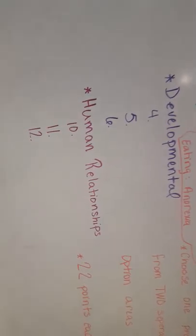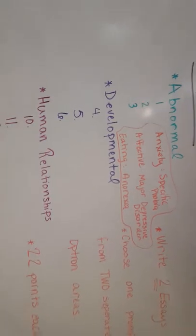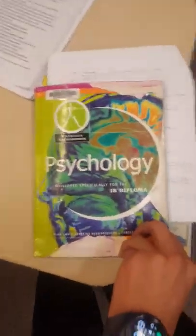In the next video we're going to concentrate on human relationships. Since these are study guides for IB HL, the textbook is Psychology IB Diploma, and the chapter of abnormal psychology runs from page 144 all the way to page 182.